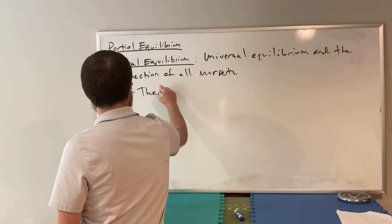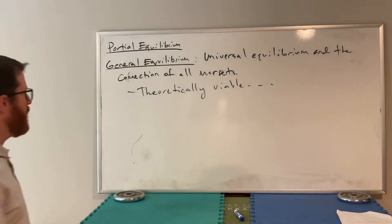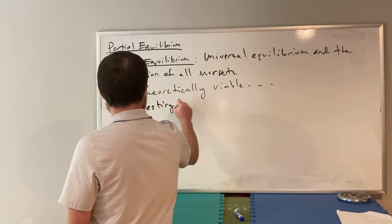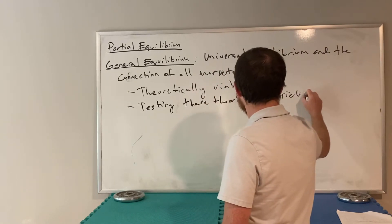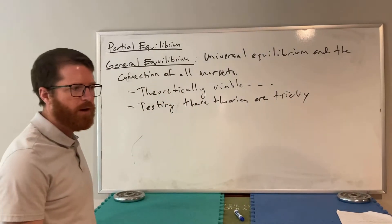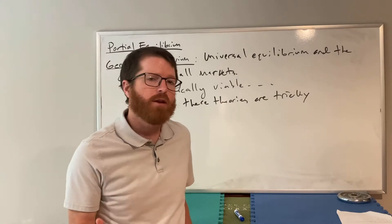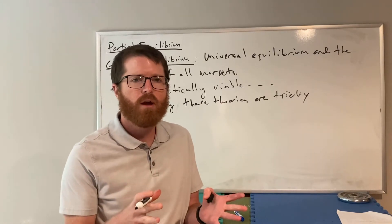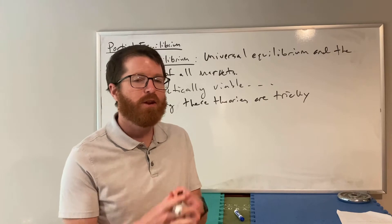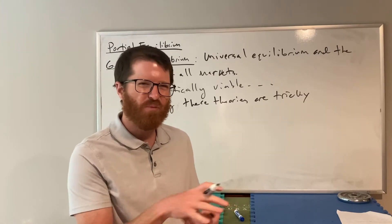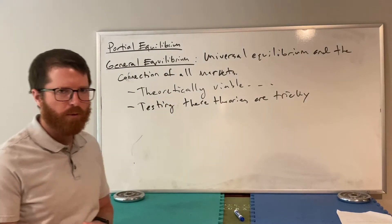Theoretically this works very well, and the lessons make a lot of sense. However, testing these theories is really tricky, because as is often the case in economics, ceteris paribus doesn't actually occur. If all the hawks are suddenly killed, there's probably a lot of other things happening simultaneously, making it difficult to isolate how that single change affects something like the number of antidotes a hospital needs.